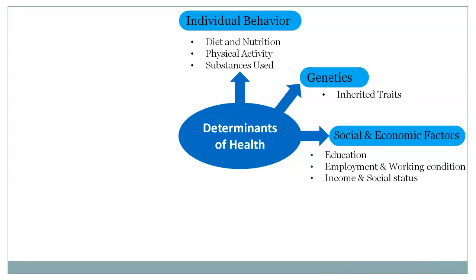The next determinant is social and economic factors, which includes education, employment and working conditions, and income and social status. Education level also determines health — it increases opportunities for income and job security and provides a sense of control over life circumstances. Poor health, more stress and lower self-confidence often result from a low educational level.